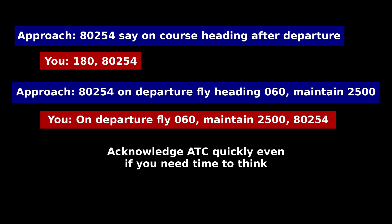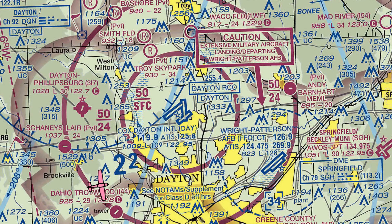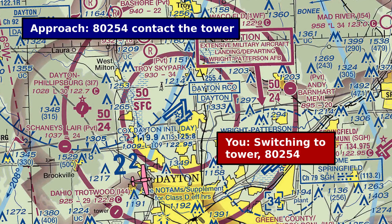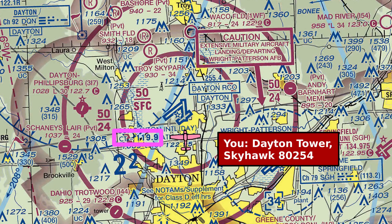It's important to respond to ATC communications quickly, because they can't use the frequency to talk to anyone else until they get your readback. So if you're ever asked a question you don't know the answer to, say 'stand by' to give yourself some time to think. A common example of this is when they give you significant information and then ask you to say intentions. At some point, the controller is going to say contact the tower. When that happens, you simply reply 'switching to tower,' and from that point forward, the flight follows the same procedures you would use for any other towered airport.